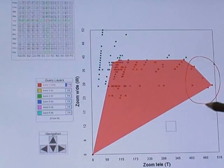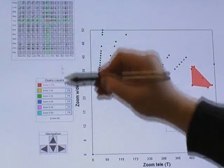Finally, he navigates to the wide and telezoom scatterplot again, and refines the query to only include the best cameras.